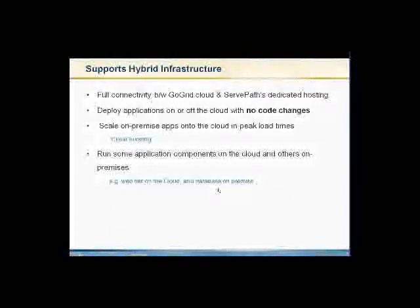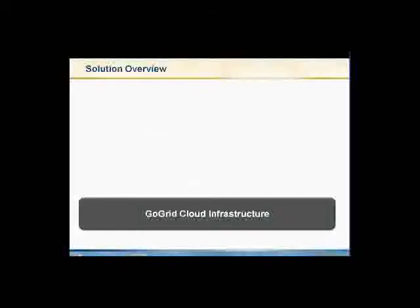In addition, the solution supports a hybrid type of architecture, which can run tests on GoGrid and production internally without code modifications — or vice versa — or even run production systems where the data is within the data center and the business logic and computation is done externally. From a technical perspective, the solution looks like this: GoGrid provides the infrastructure, and GigaSpaces provides multiple images — server templates.